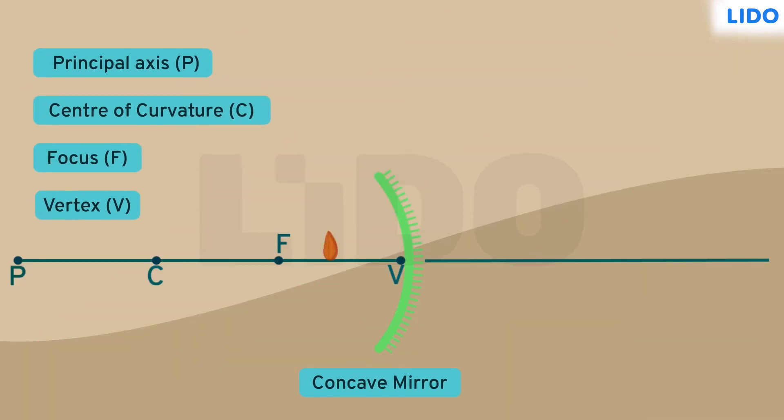But how does the concave mirror achieve the magnification? Let us find out. We have the same nut and a concave mirror is placed in front of it. The ray from the bottom of the nut coincides with the principal axis.